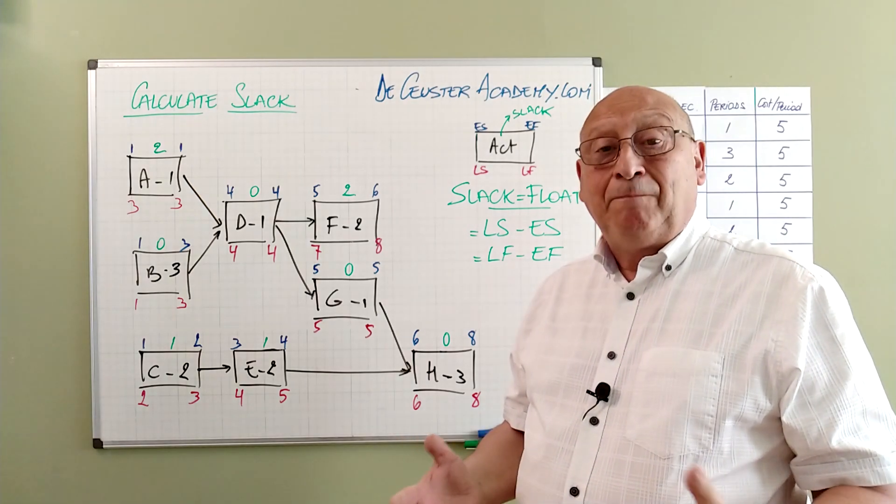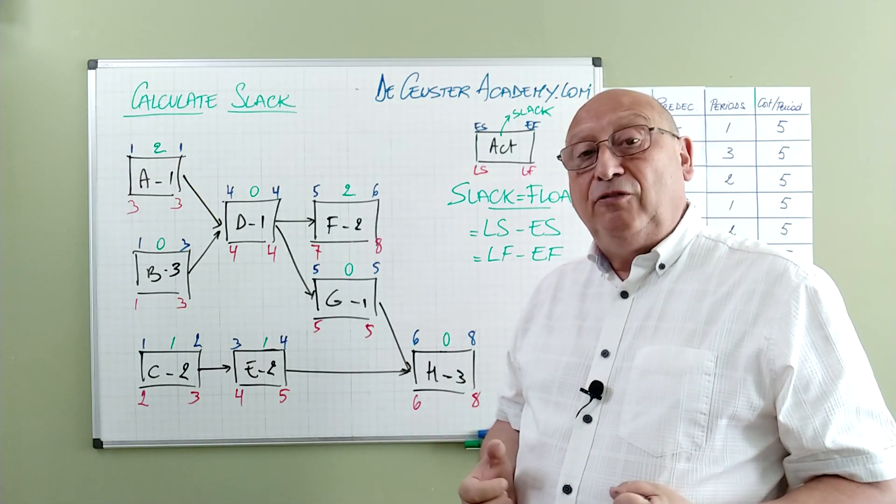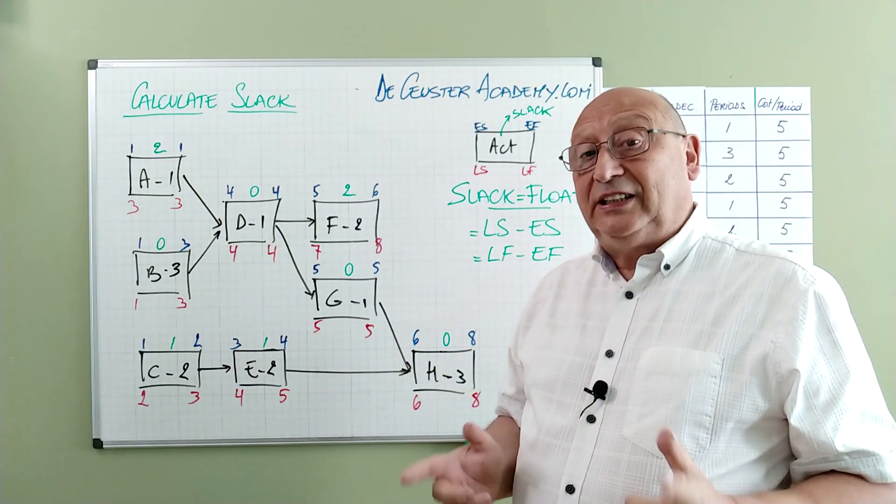In this specific case the activities with slack 0 are in fact the activities on the critical path. But like I said it's not always the case.